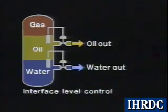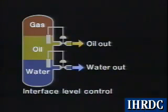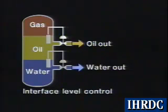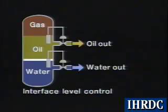Three different methods of control are often used on vertical three-phase separators. The first is strictly level control. A regular displacer float is used to control the gas-oil interface and regulate a control valve dumping oil from the oil section. An interface float is used to control the oil-water interface and regulate the water outlet control valve.